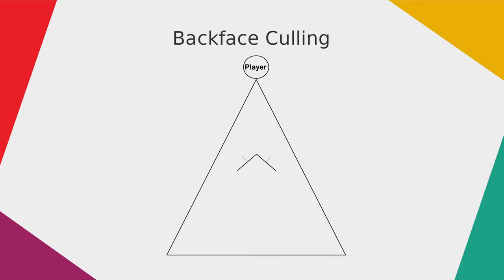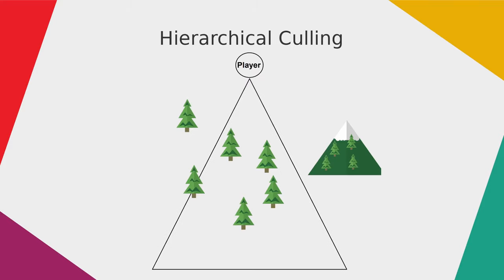Now that you know the basic techniques, let's dive into something more performance-optimized: hierarchical culling. To increase performance further, the idea is to automatically create even bigger bounding volumes around large collections of objects. Only if the big parent bounding volume is cut by the view frustum will it then check the child bounding volumes inside to see if those are cut as well.